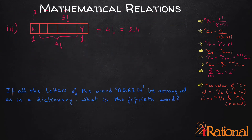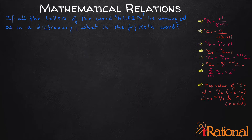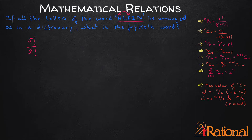Let's see another question. If all the letters of the word AGAIN are arranged as in a dictionary, what is the 50th word? The word AGAIN has 5 letters, so the number of arrangements is 5 factorial. But because we have 2 A's repeating, we divide by 2 factorial, giving a total of 60 words. Now we want to figure out which one is the 50th word if written in dictionary order. Let's figure out how many words start with A.